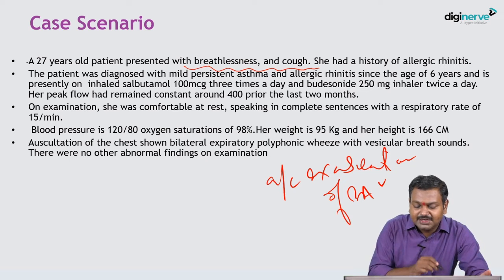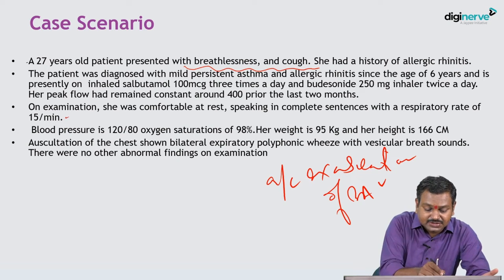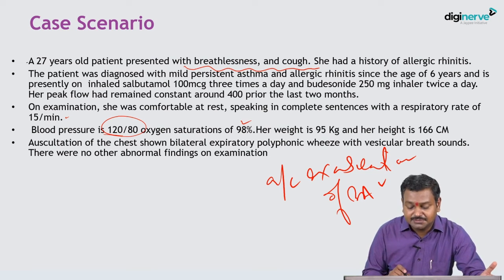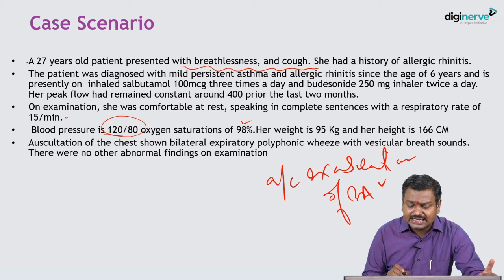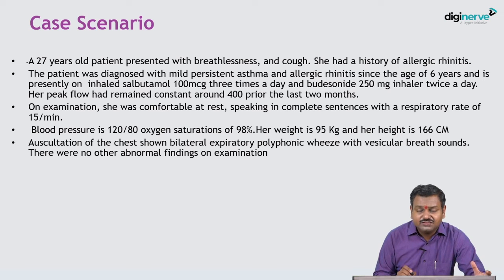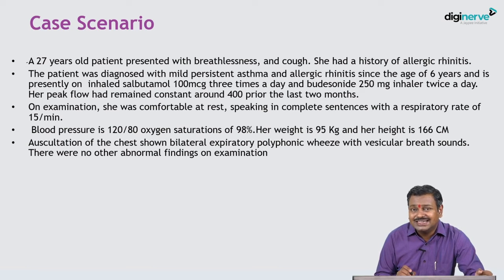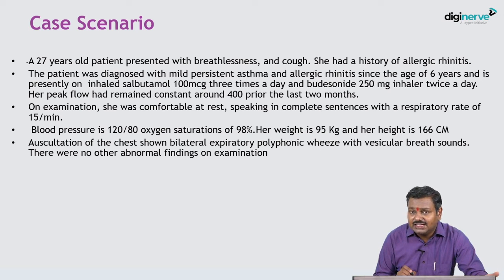She is comfortable at rest, speaking full sentences, respiratory rate is not elevated, BP is not low, and saturation is maintained. So it is not a severe exacerbation — it is a moderate exacerbation possibly. Since she is comfortable, it is better called moderate persistent asthma. She is on medications, now comes with worsening symptoms but is not very sick — vitals are stable — yet the asthma is not controlled. We have to assess the reason for poor control.